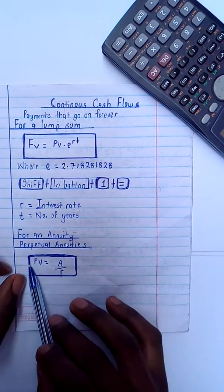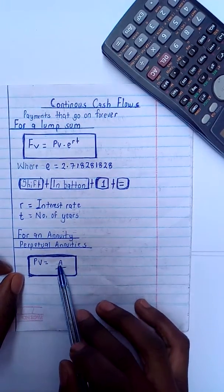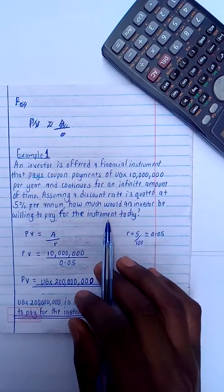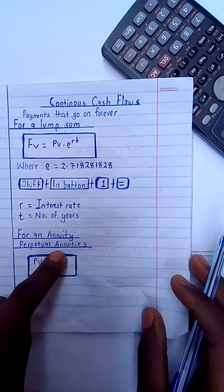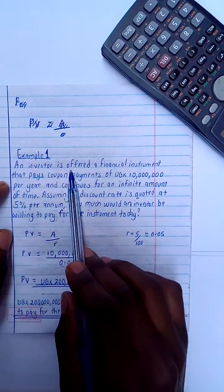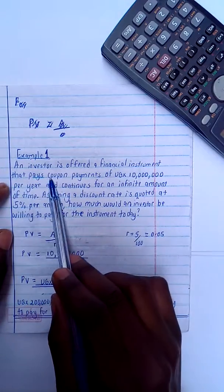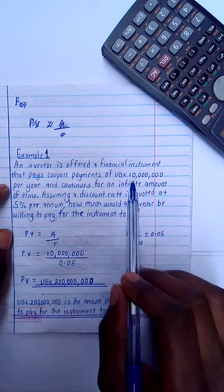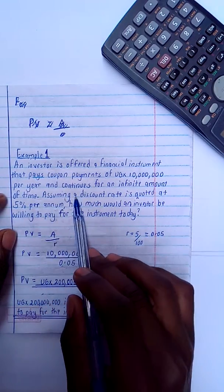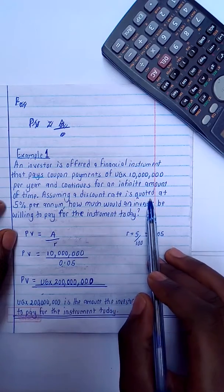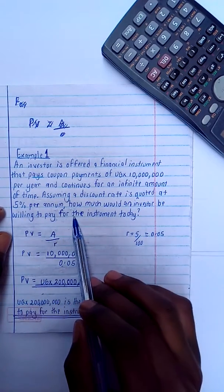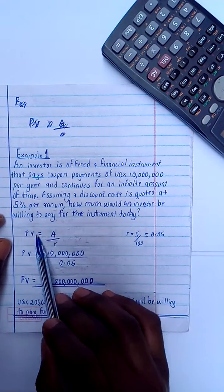Then for an annuity, it's called perpetual annuities. For it, it's given by the formula PV equals a divided by r. Moving on to the perpetual annuities, an example for this: an investor is offered a financial instrument that pays coupon rates of 10 million per year and continues for an infinite amount of time. Assuming discount rate is quoted at 5% per annum, how much would an investor be willing to pay for the instrument today?